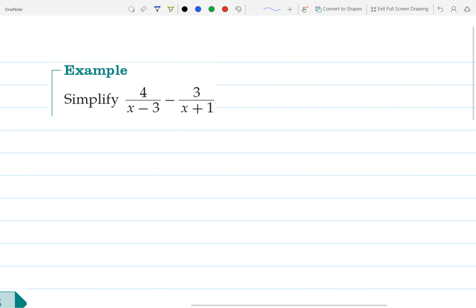For our next example, we don't have a common denominator, so we would have to find one. When we're not sure how to find one, we simply multiply by each denominator.